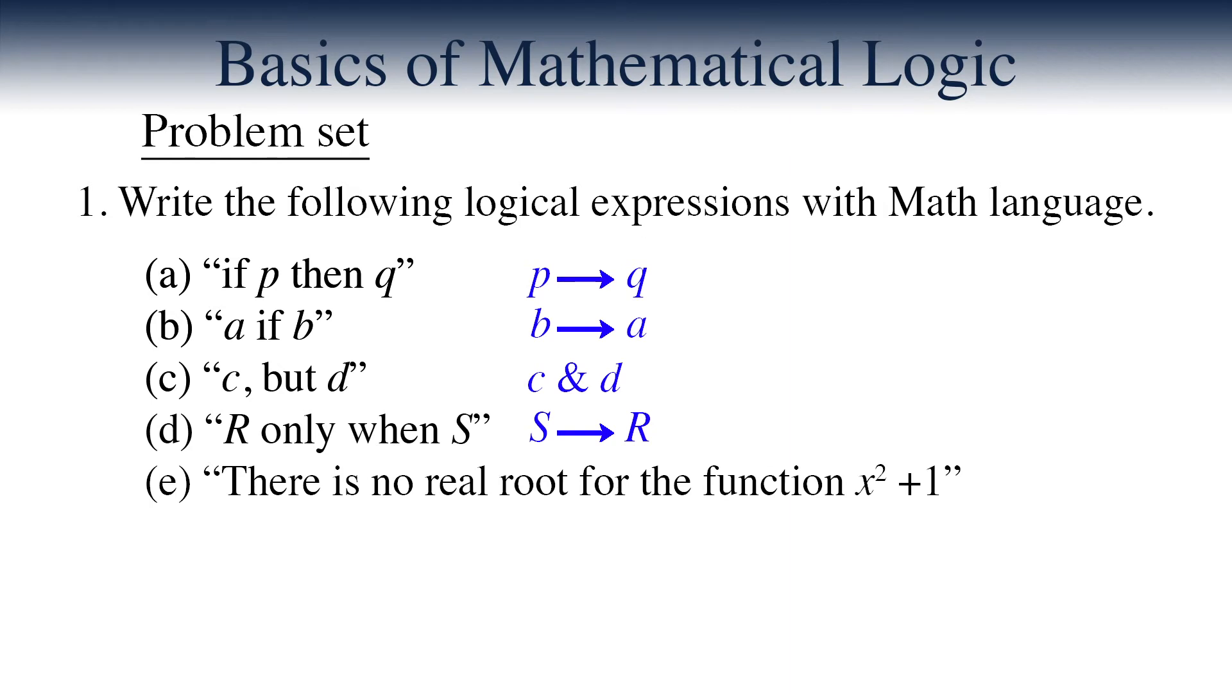Item E says, there is no real root for the function x squared plus 1. So it basically means that we cannot find any real solution for the equation x squared plus 1 equal to 0. We start with a non-existential quantifier to write, there does not exist an x belonging to the real numbers, such that x squared plus 1 is 0.